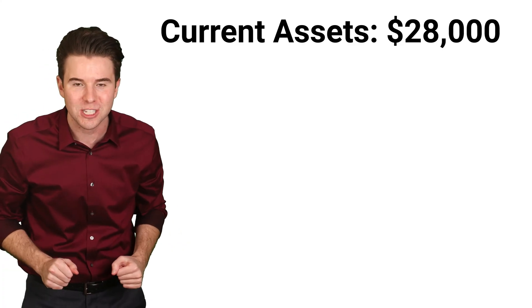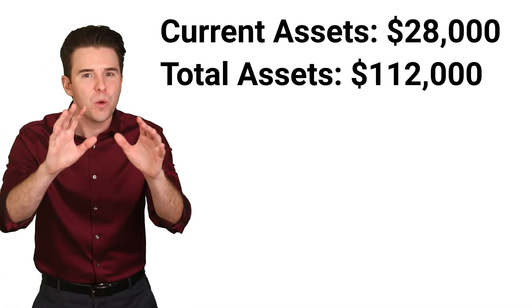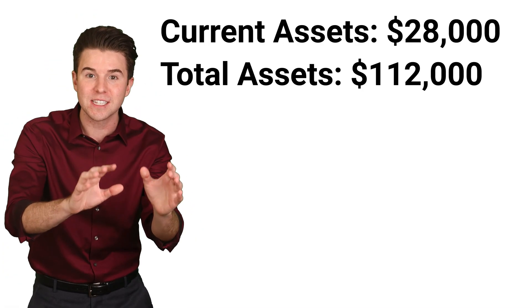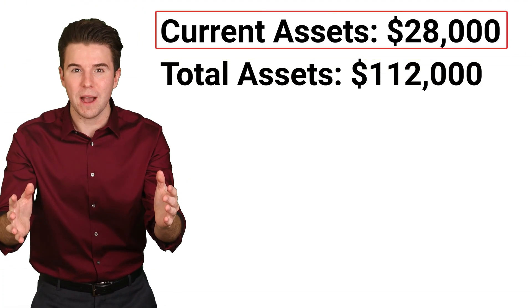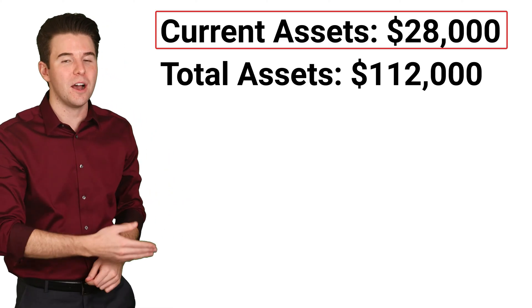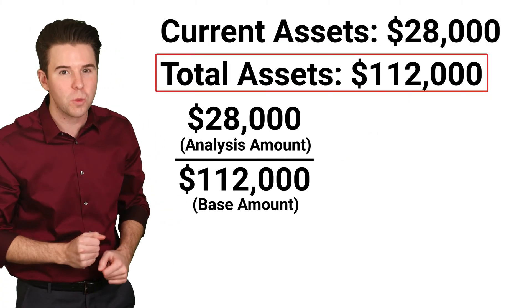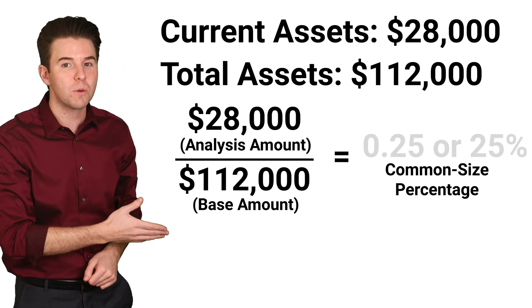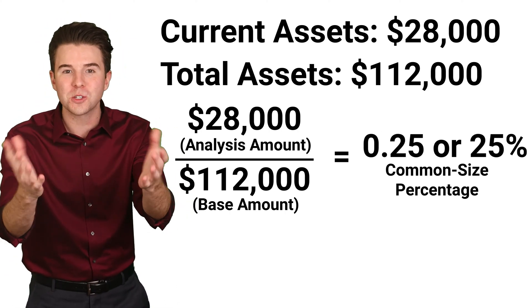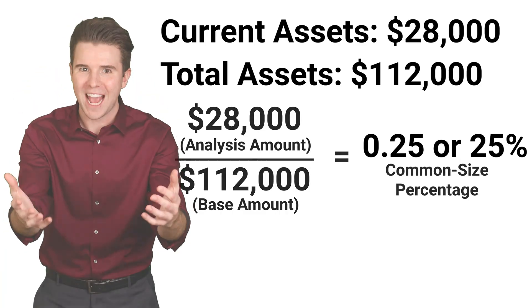To do this, assume a company reports current assets of $28,000 and total assets of $112,000, and we want to know the relative size of current assets to total assets. We take the analysis amount, which is current assets of $28,000, and divide it by the base amount, which is total assets of $112,000. This gets us a common size percentage of 0.25 or 25%, meaning current assets is 25% of total assets.